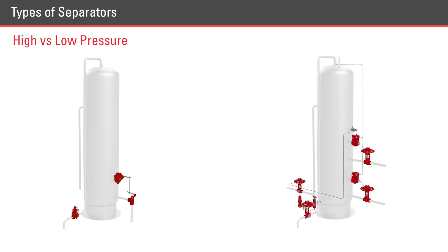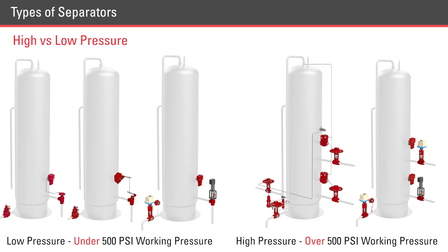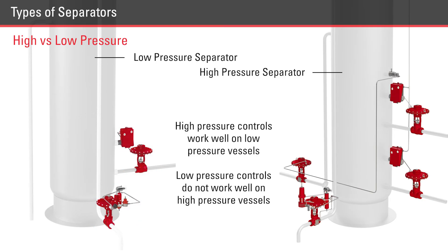Separators can be high or low pressure. Anything under 500 psi is considered low pressure, and anything above 500 psi is considered high pressure. There are times that you have to look closely to see the differences between high and low pressure vessels. One confusing factor is that high pressure controls are sometimes needed on low pressure vessels in order to have proper control. High pressure controls can work well on low pressure vessels; however, low pressure controls do not work well on high pressure vessels.